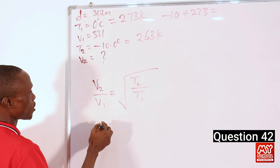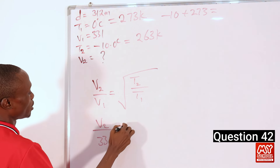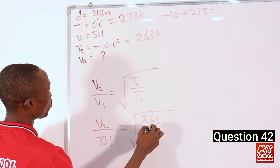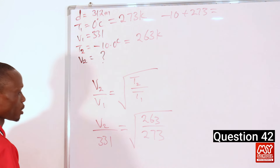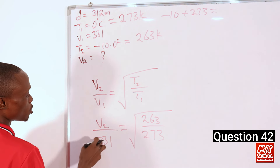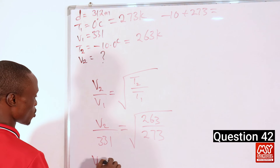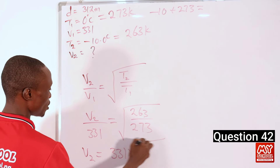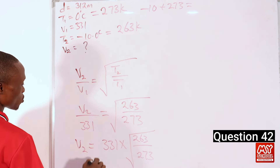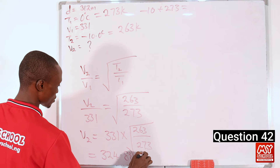So V2 is what we are looking for. We know V1 equals 331. Plugging in our values: V2 over 331 equals the square root of 263 over 273. We multiply both sides by 331, so that V2 equals 331 times the square root of 263 divided by 273. This whole thing equals approximately 324.88 meters per second.